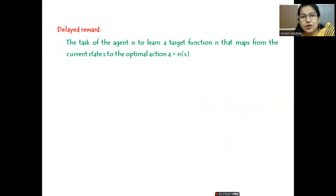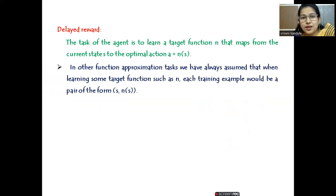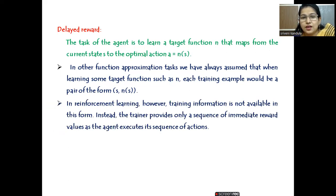The first thing is delayed reward. The task of the agent is to learn a target function n that maps from the current state to an optimal action, stated as a = n(s). But in the other learning tasks from earlier chapters, we always formulated our target function as x comma t(x), or x comma y(x). In reinforcement learning, the training information is not available in this form — we don't have any problem-specific training data in the form of an instance and a target.